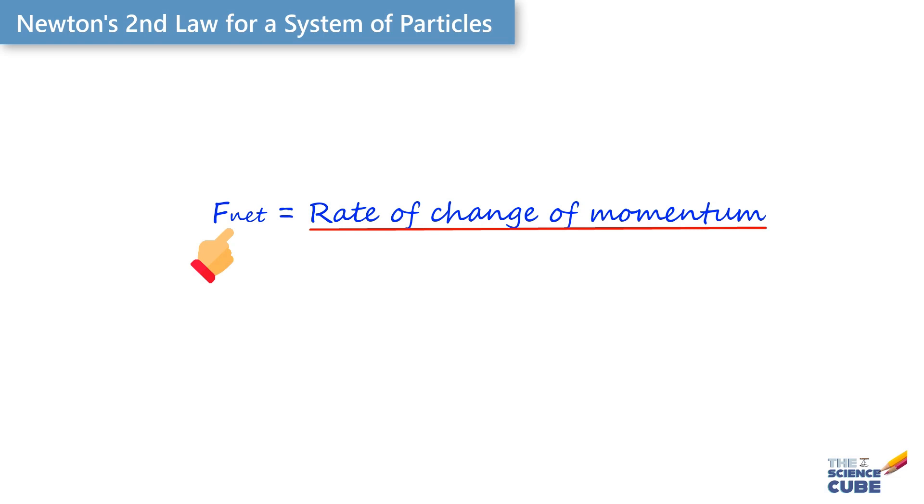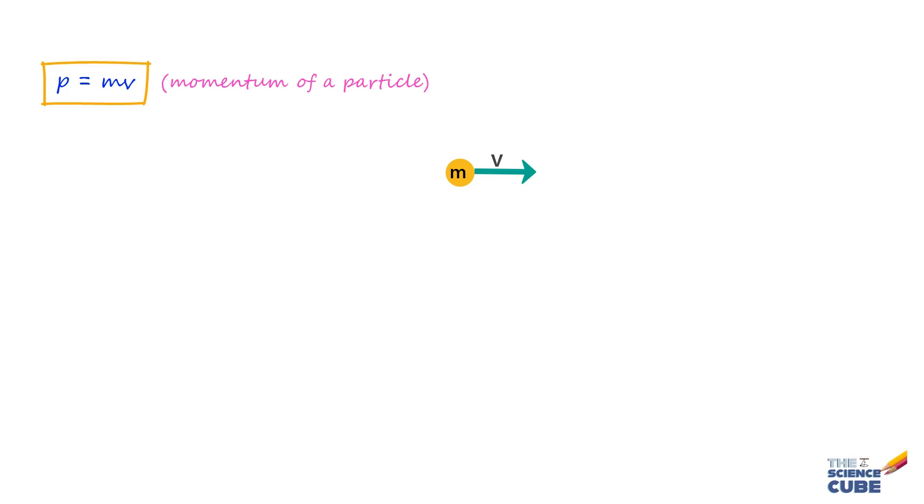Understanding both equations is key to solving many physics problems with ease. Let us see here how the two equations are equivalent. The linear momentum of a particle is a vector quantity P that can be written as a product of mass and velocity.